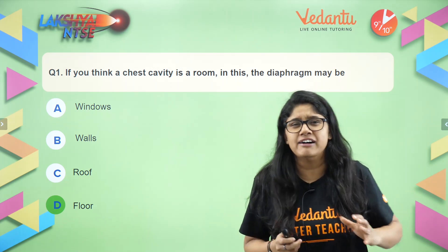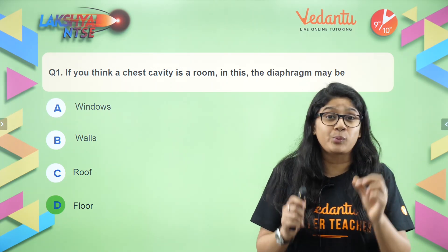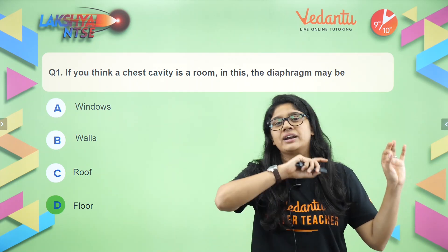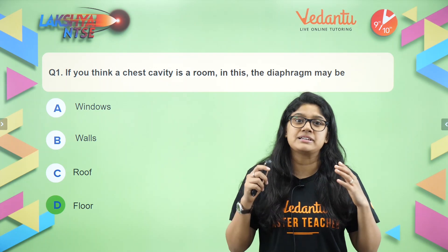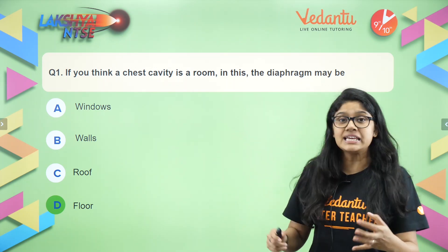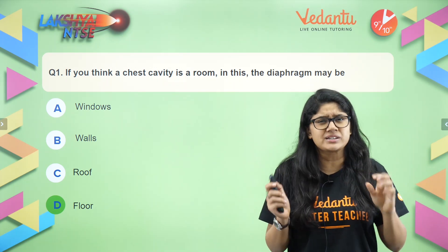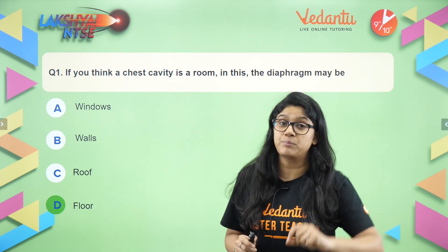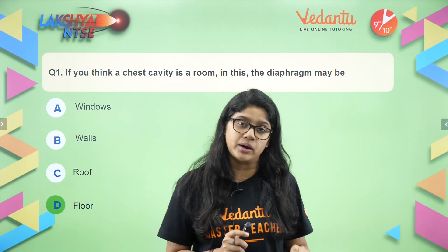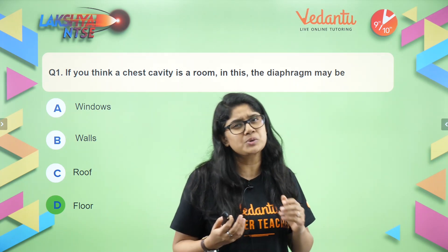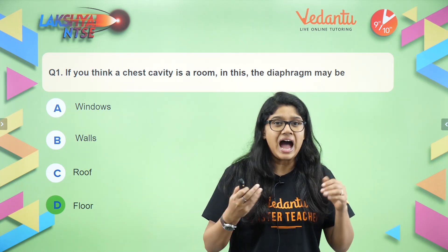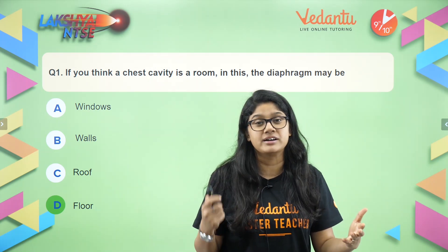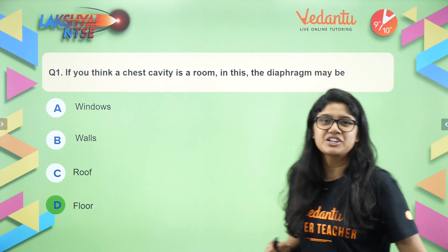Can you see how they have given such a twisted question? We usually think there will be a direct one-liner from the NCERT, but not here. They have twisted this very small concept. This is really important for your stage two also, because the questions that come in stage one often reflect what might come in stage two. Please stay tuned.